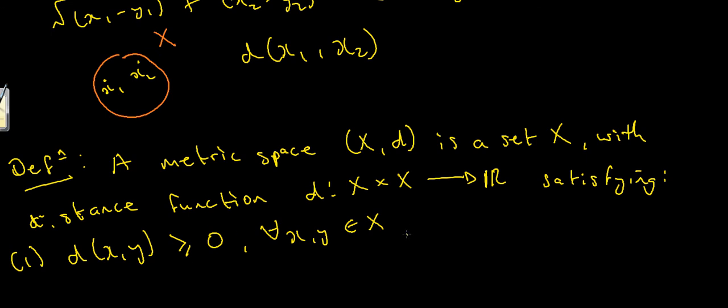We also want one more condition. We want the distance between x and y to be zero if and only if x equals y. And this makes sense. If x and y are the same point i.e. they're on top of each other then there's no distance between them. So that's what this statement means. This is saying that if the distance between x and y is zero then x equals y. And if x equals y then the distance between x and y is equal to zero.